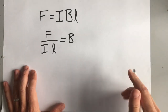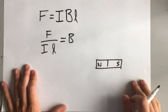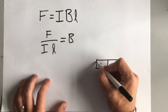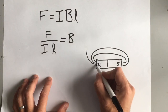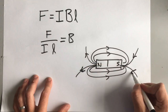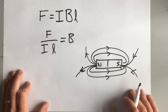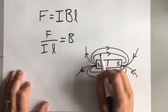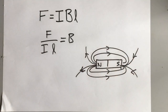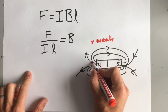Another way of representing magnetic fields, seen as far back as GCSE or key stage 3, is field lines in a diagram. We have a magnet and the field lines go from north to south. We can see there is probably a stronger magnetic field where there are lots of field lines close together, and a weaker magnetic field where there are fewer field lines.